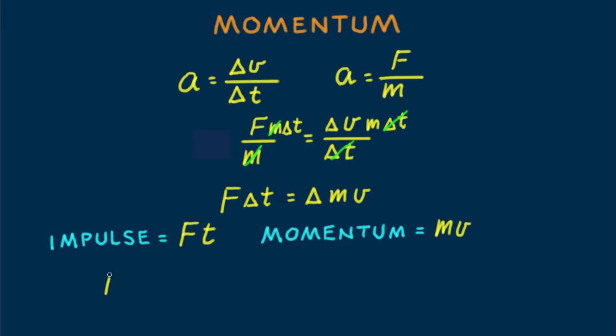Or in symbol form, f t equals delta m v. We say the impulse exerted on an object changes the momentum of the object. f t equals delta m v is called the impulse-momentum relationship.